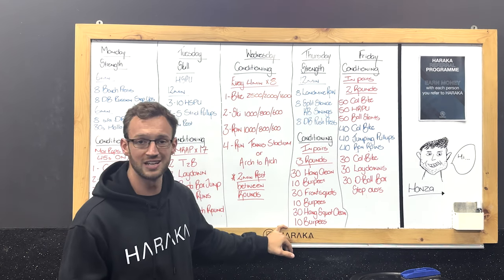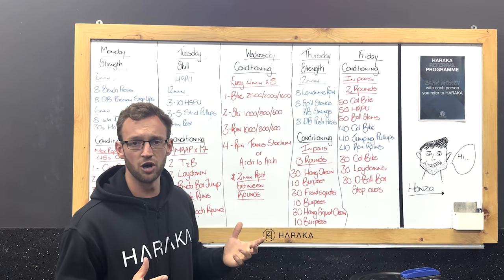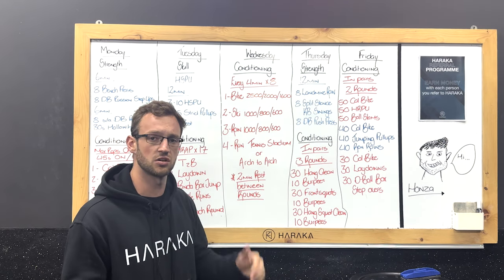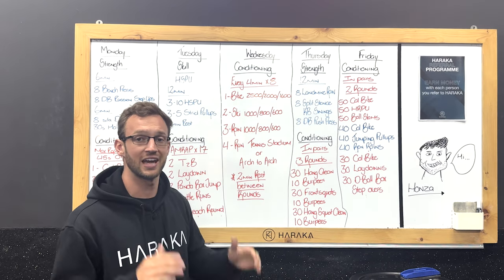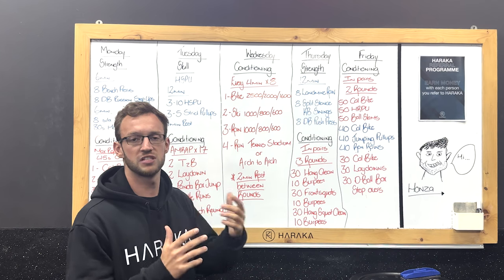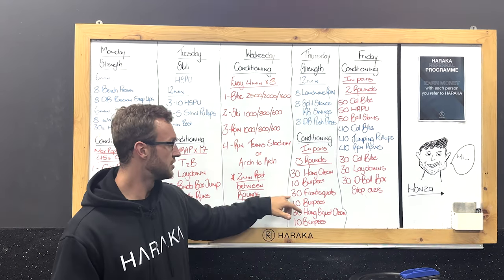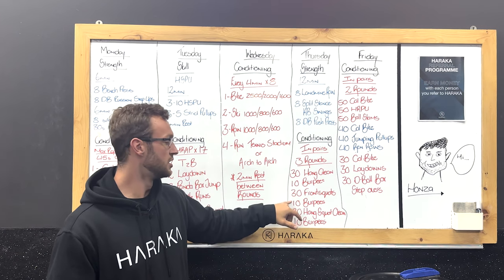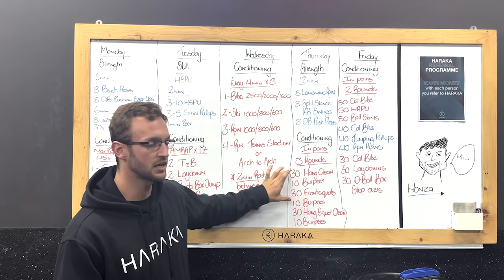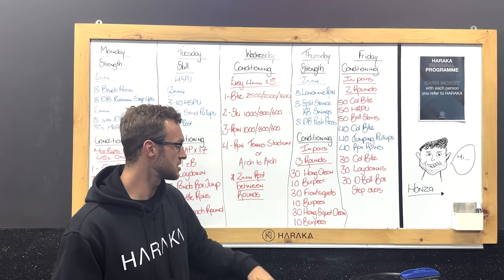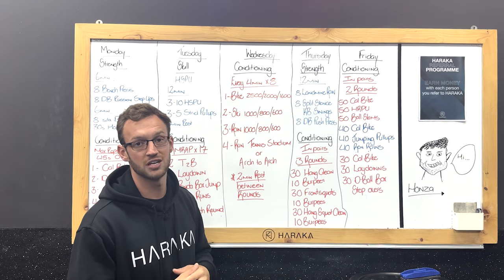Then conditioning. This one will be done in pairs, in teams of two. It's going to be three rounds, a lot of barbell stuff. We touched on the barbell complexes this week and next week we're just going to carry on with it. Three rounds of 30 hang cleans, that's obviously shared between you and your partner. 10 burpees shared between you and your partner. Then we've got 30 front squats, 10 burpees again. And then we have 30 hang squat cleans, so we're basically just combining the hang clean and the front squat into one movement. And then we're going to finish again with 10 burpees. And you're going to repeat that three times as fast as you can.